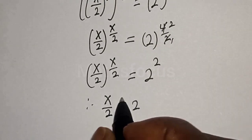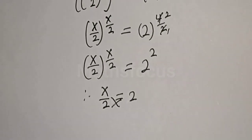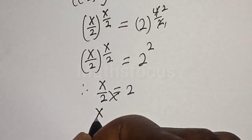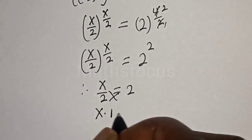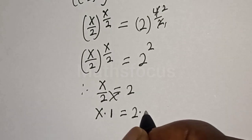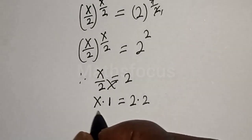Let's cross-multiply. We have S multiplied by 1 is equal to 2 multiplied by 2.